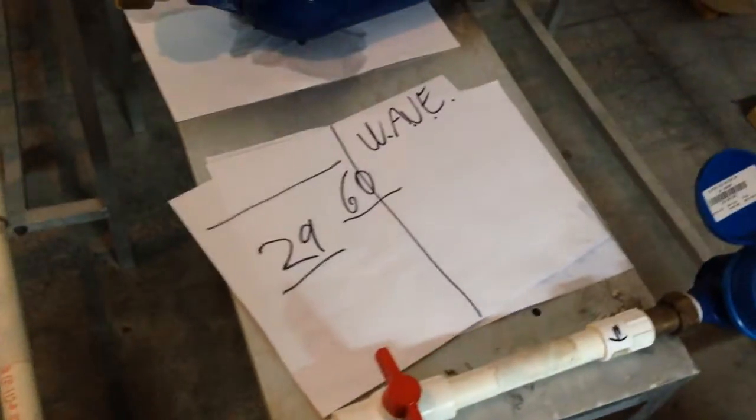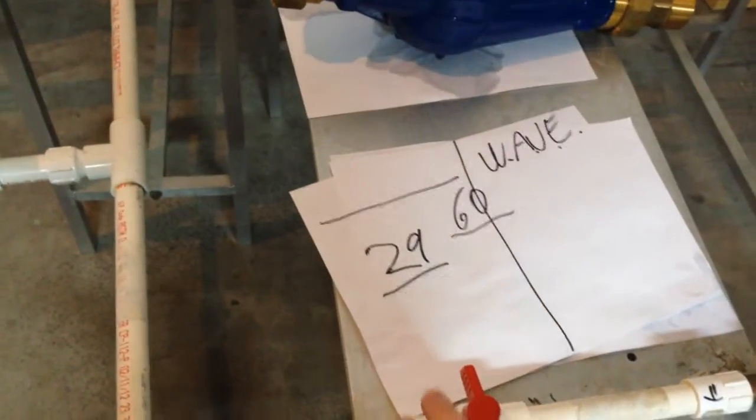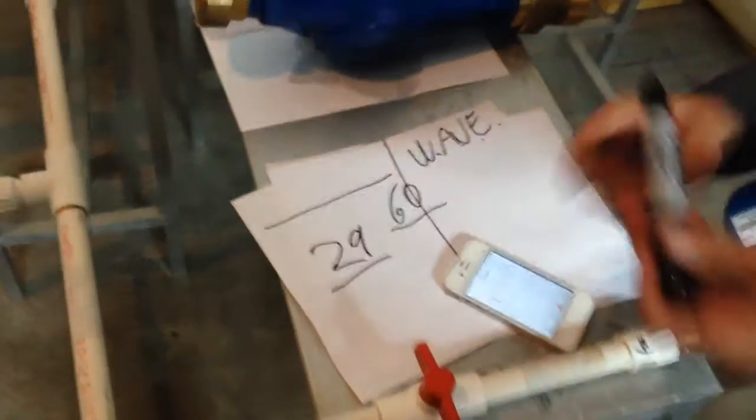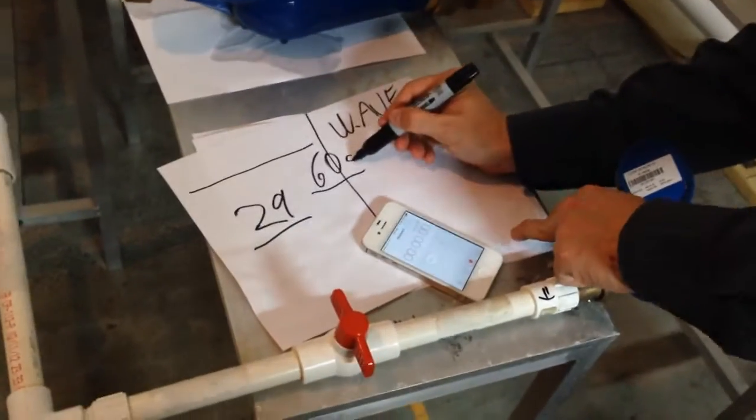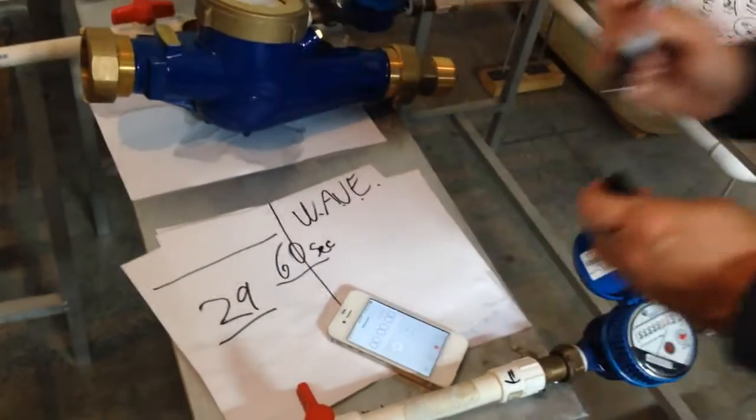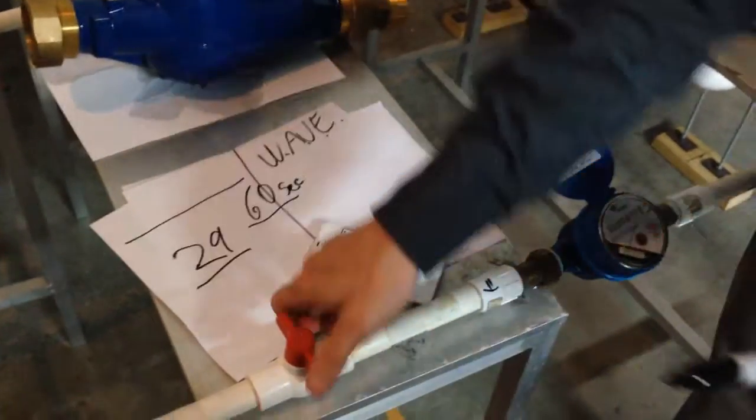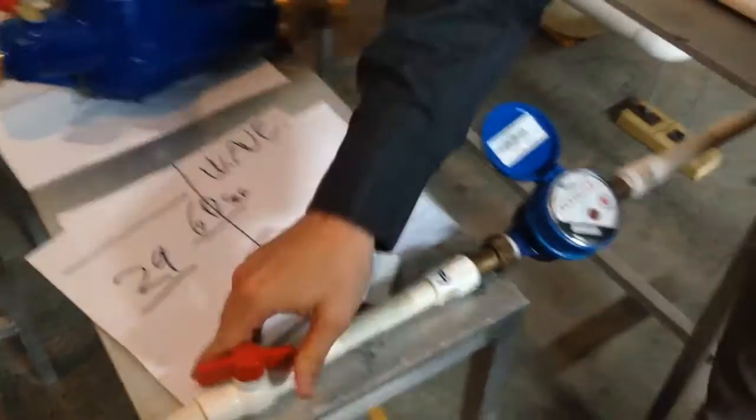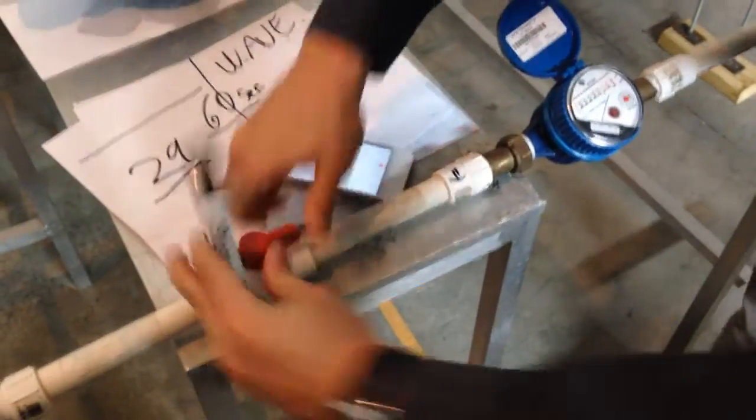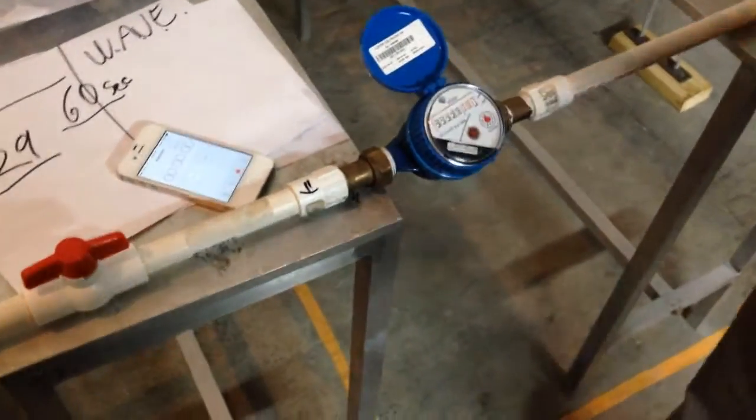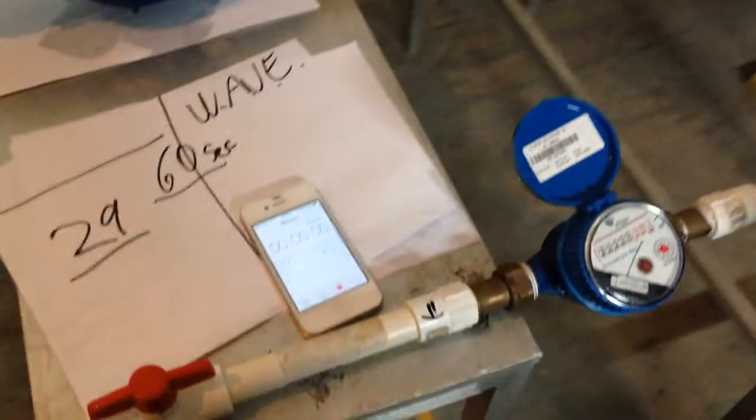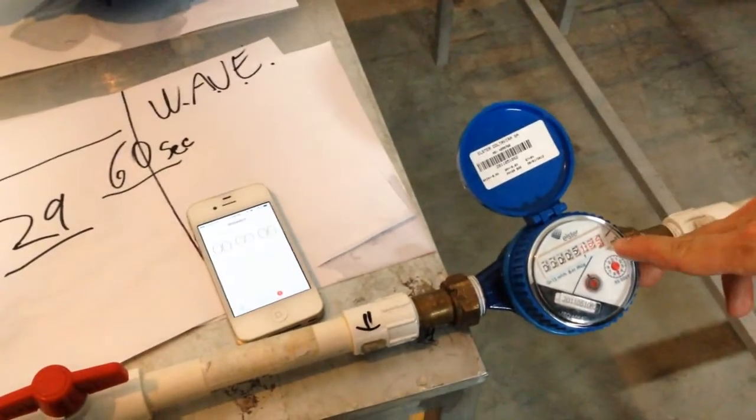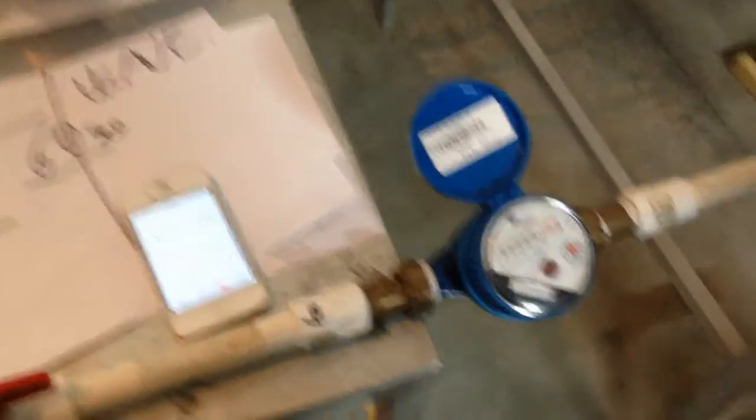So without the valve, it was reading 29 in 60 seconds. And now we're going to read it with the valve. With the valve right now, we open this line, close the other one. And open the line. Let's start, let's wait to 17, and then we'll start there.